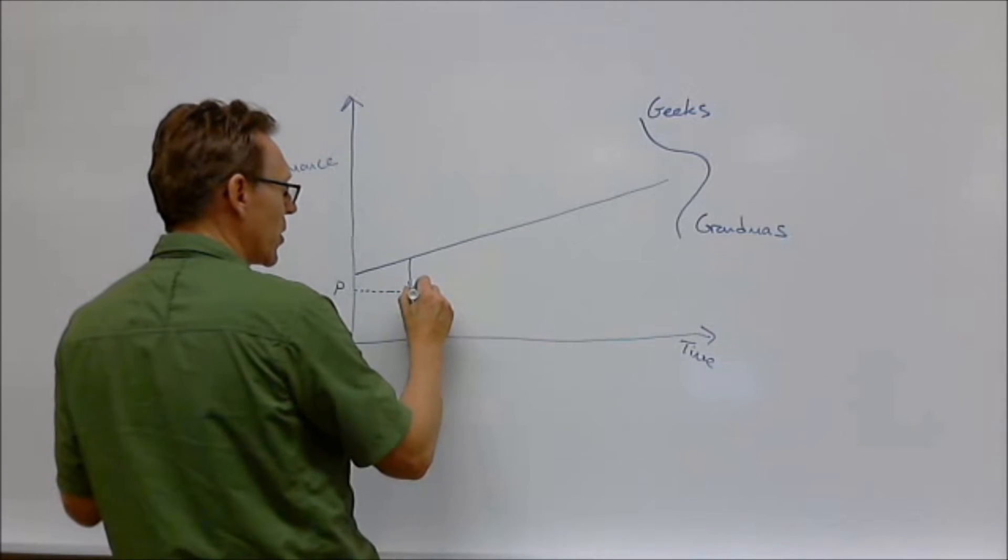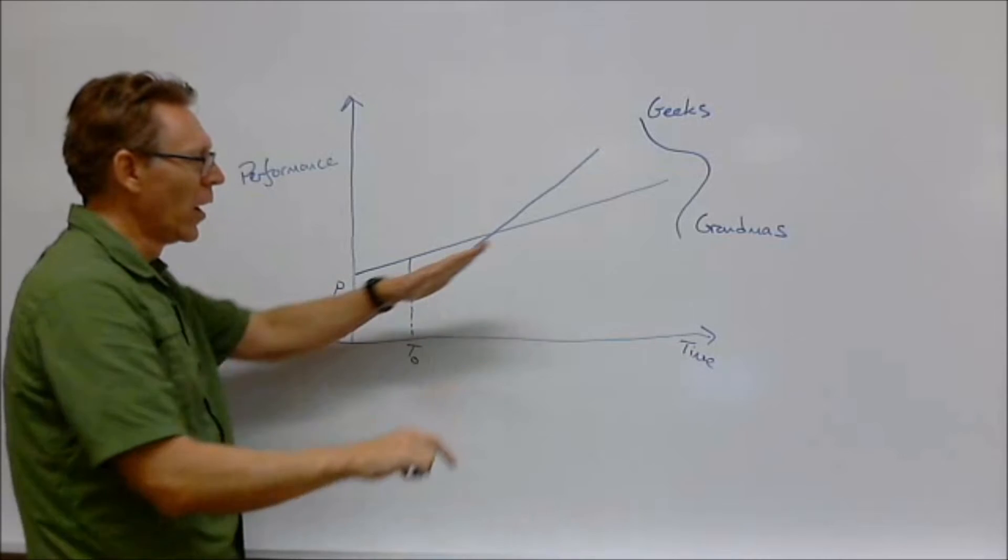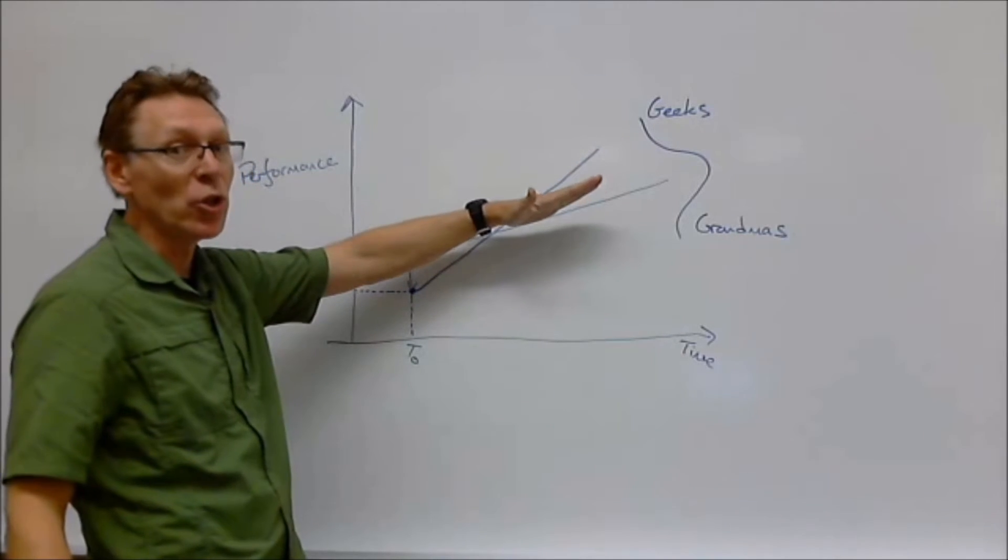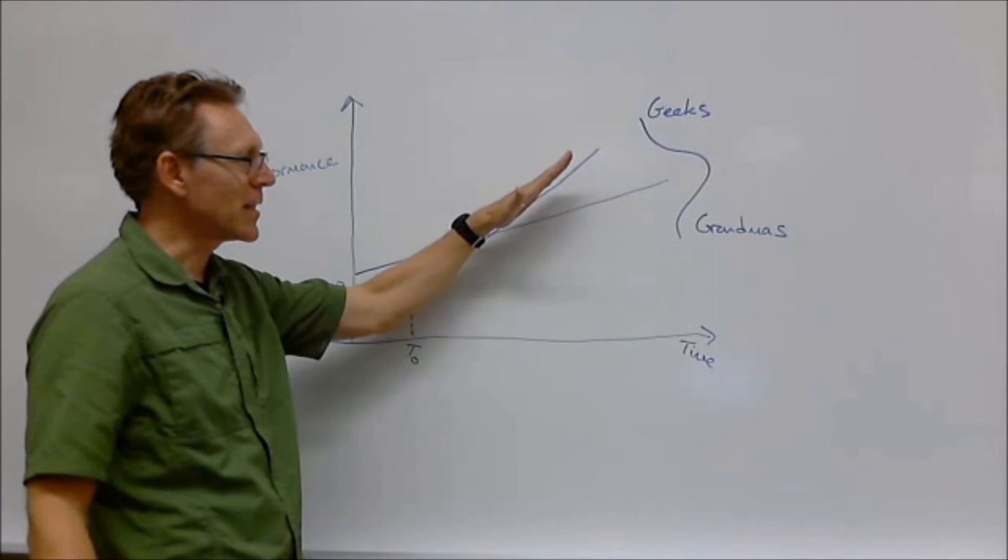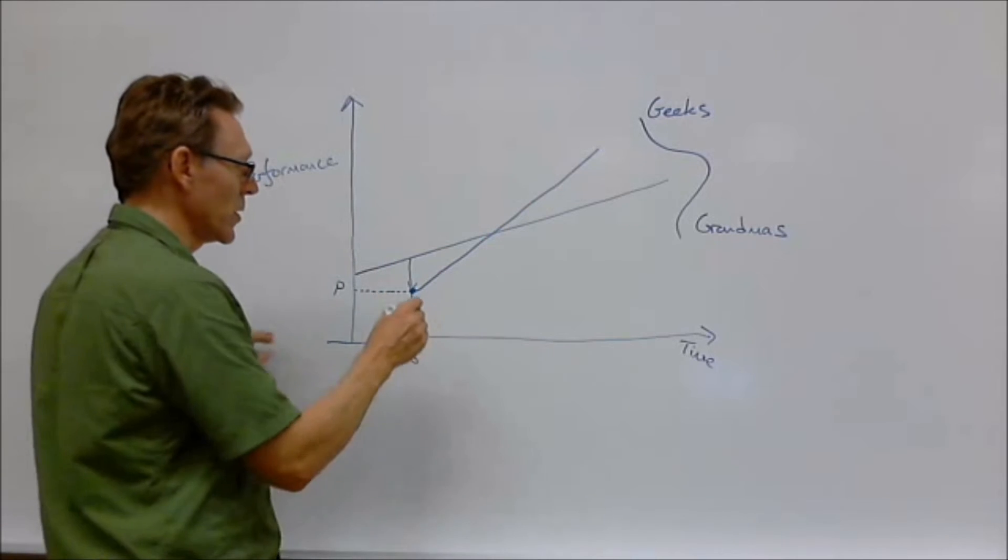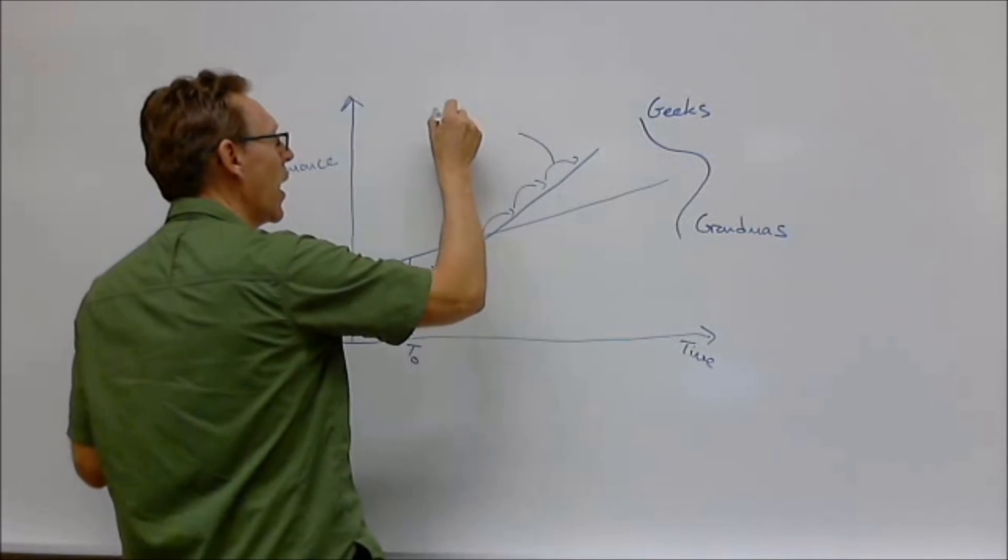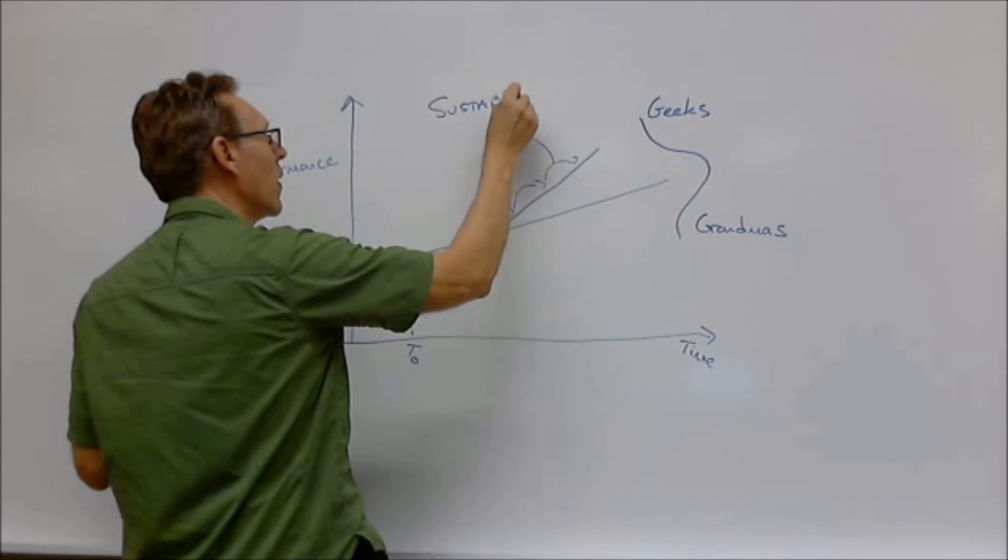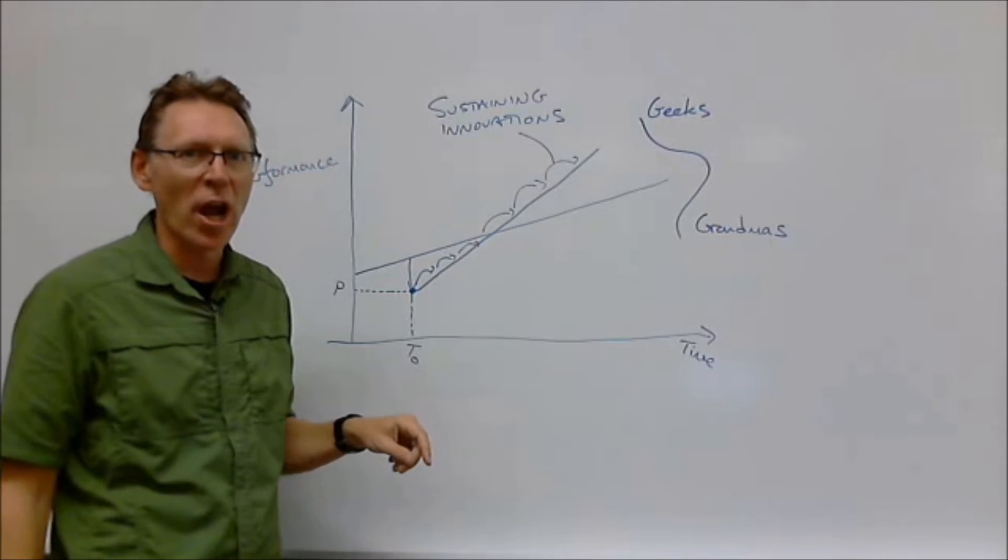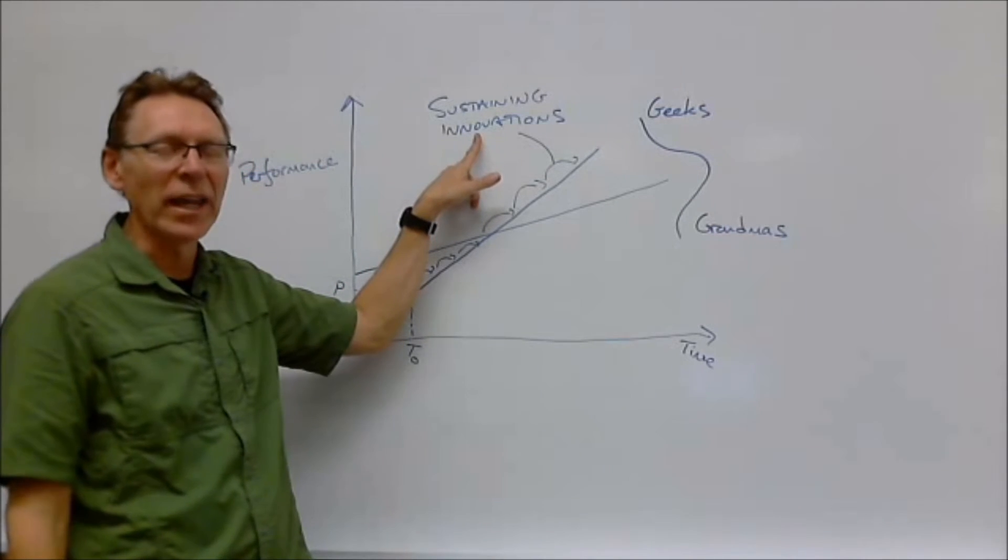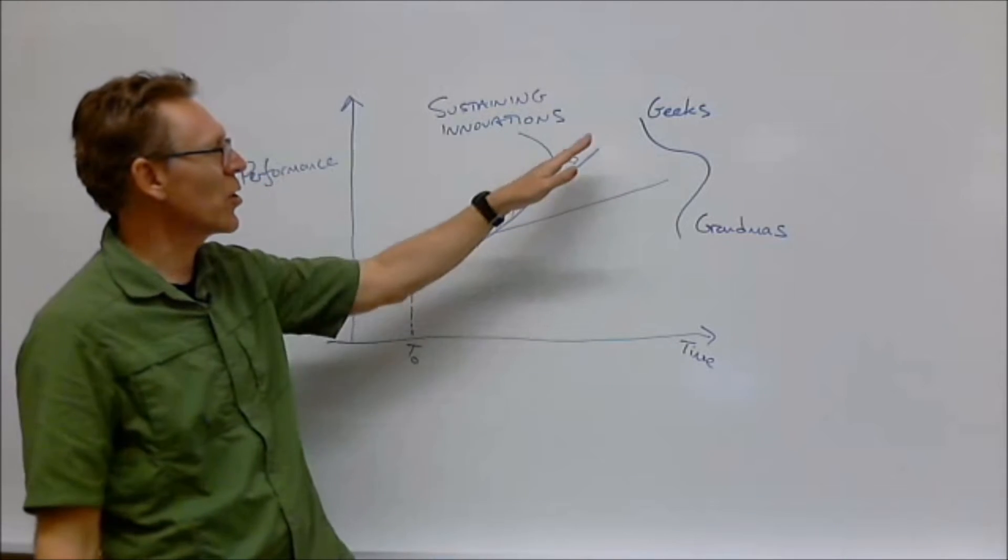Now, here was the critical finding of Clayton Christensen. And it was that these innovations improve at a faster rate than the rate that we can use those innovations. So the rate of improvement in the performance of the innovation over time is steeper than the rate at which we can use those improvements. And they come about in these little chunks like this. And these guys here are called sustaining innovations. So there it is. Those are called sustaining innovations.